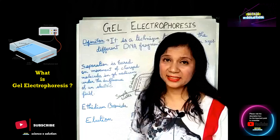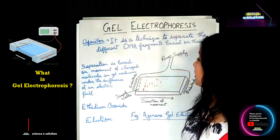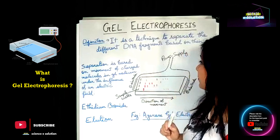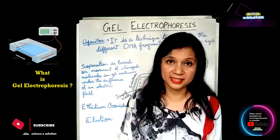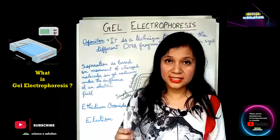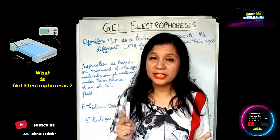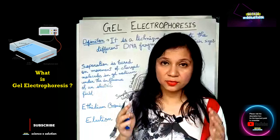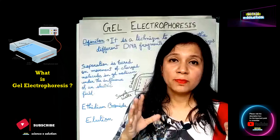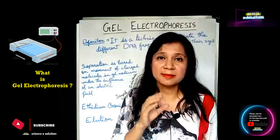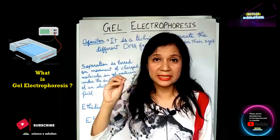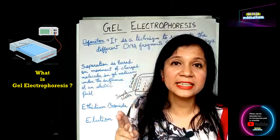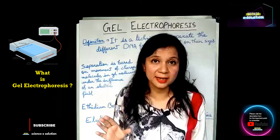First of all, what is its definition? Gel electrophoresis is a technique to separate different DNA fragments based on their sizes. This topic is from the biotechnology chapter. First of all, we have the desired DNA fragment — the desired gene.